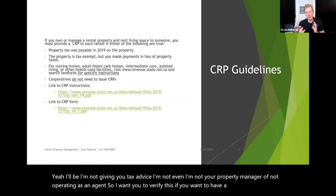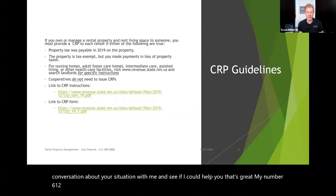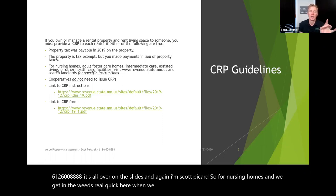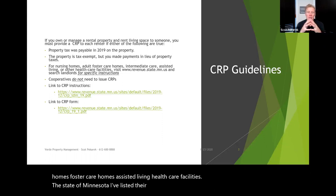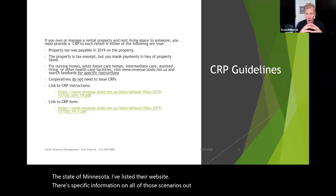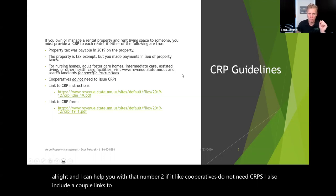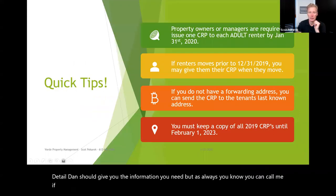If you want to have a confidential conversation about your situation with me, my number is 612-600-8888. For nursing homes, foster care homes, assisted living, and health care facilities, the state of Minnesota has specific information on their website for all of those scenarios — when in doubt, you call them. Cooperatives do not need CRPs. I also included a couple links to the CRP instructions, which are detailed and should give you the information you need.